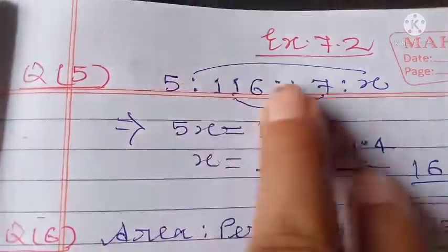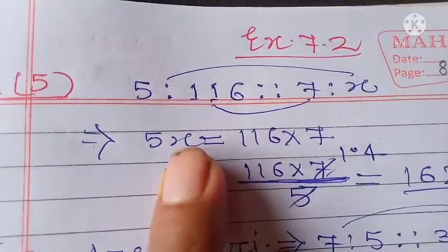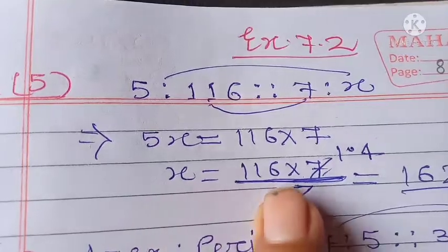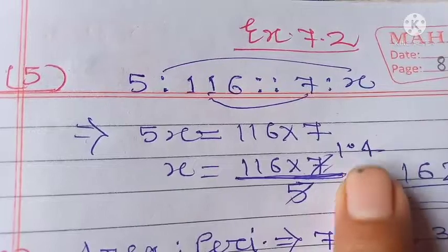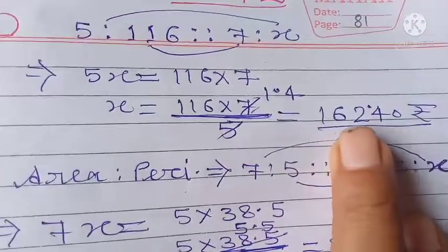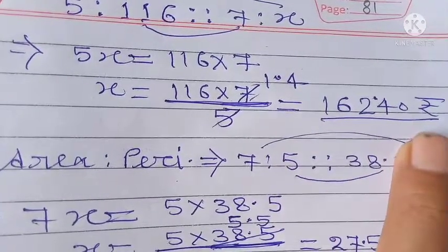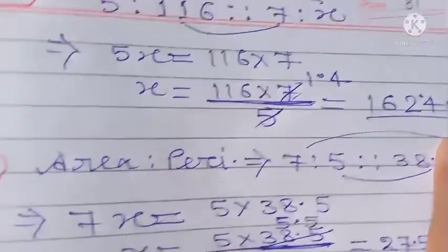So, product of extremes equals product of means. Therefore, 5x equals 116 into 7. Then x equals 116 into 7 divided by 5. So what will it be? It will be rupees 162.40. The answer is rupees 162.40.